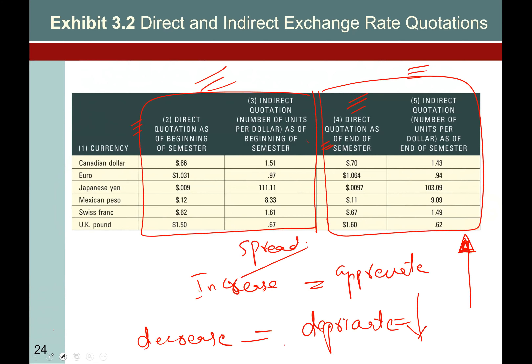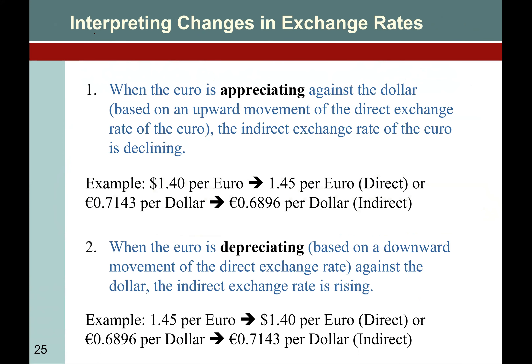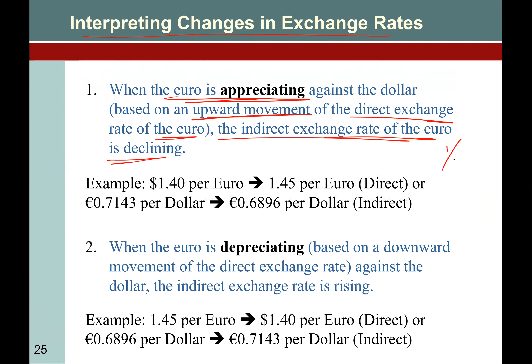Let's see how we interpret this. When the Euro is appreciating against the dollar, it means there is an upward movement of the direct exchange rate of the Euro. Correspondingly, the indirect Euro rate is declining, which means it is the inverse of the direct quote.